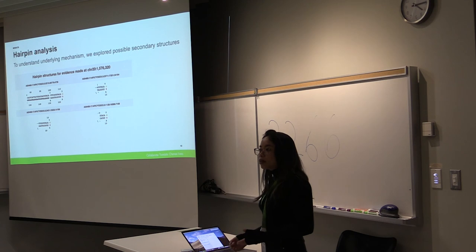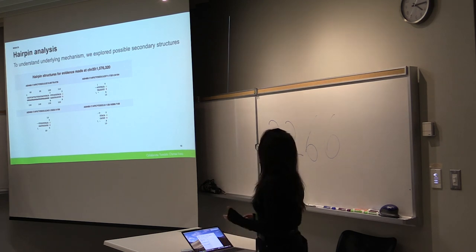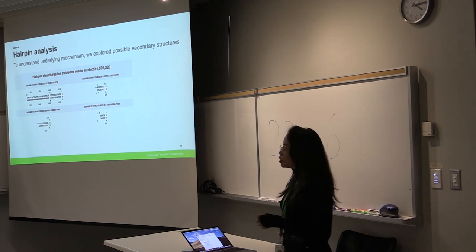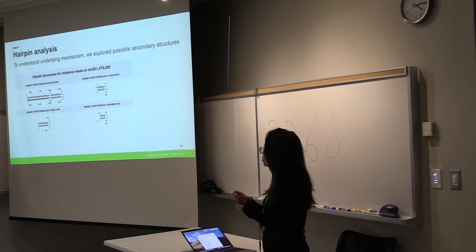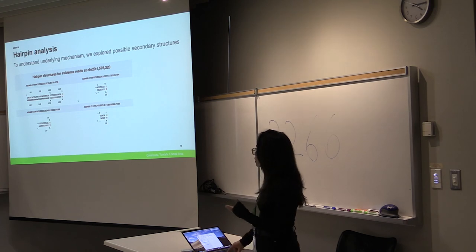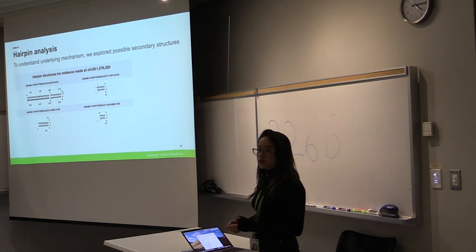To understand the underlying mechanism of why this kind of read occurs, we imposed it under this secondary structure analysis called RNAfold. And for every read that supported this false positive mutation, we tried to see if there was possibility of it to fold over on itself. What was interesting was a lot of the reads seemed to do that. And at the apex of the hairpins was where we were seeing these false positive mutations.